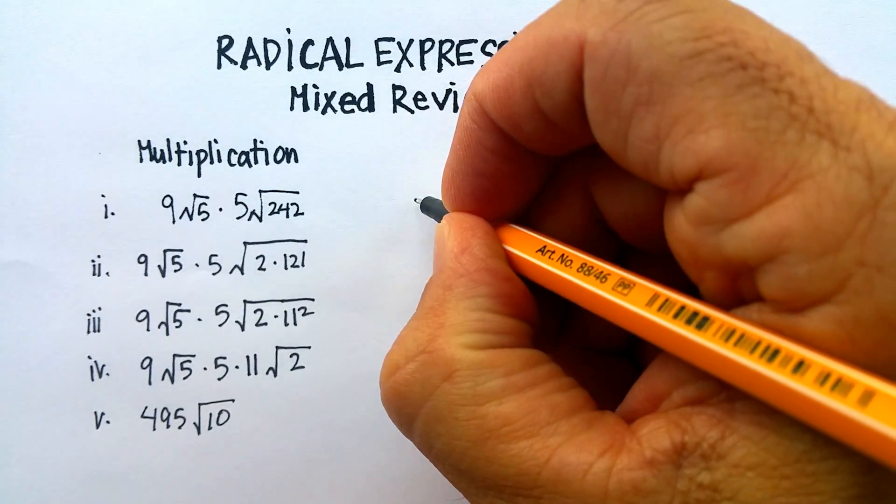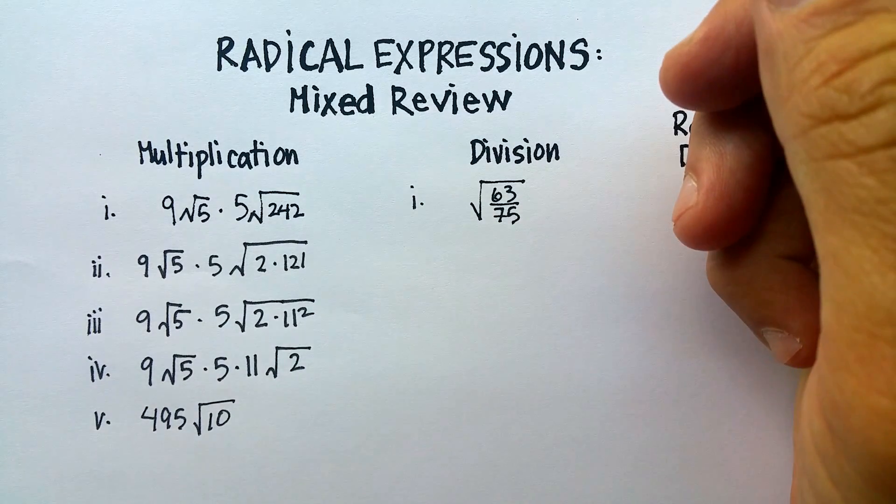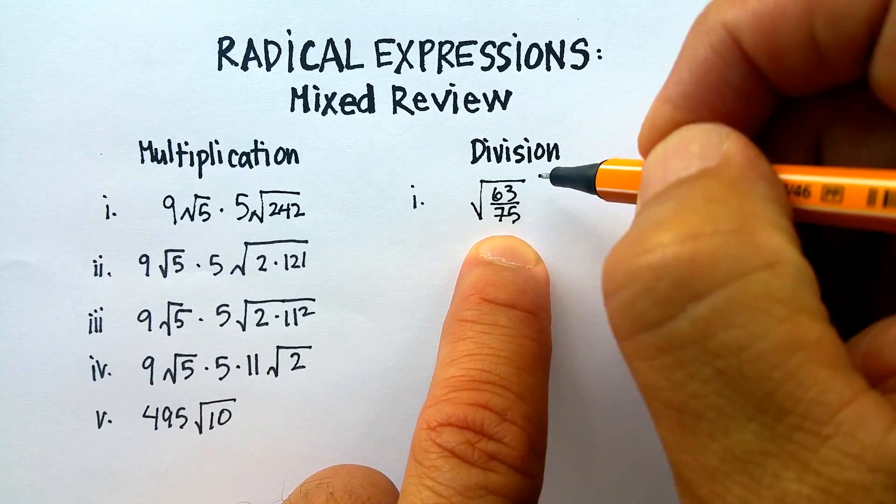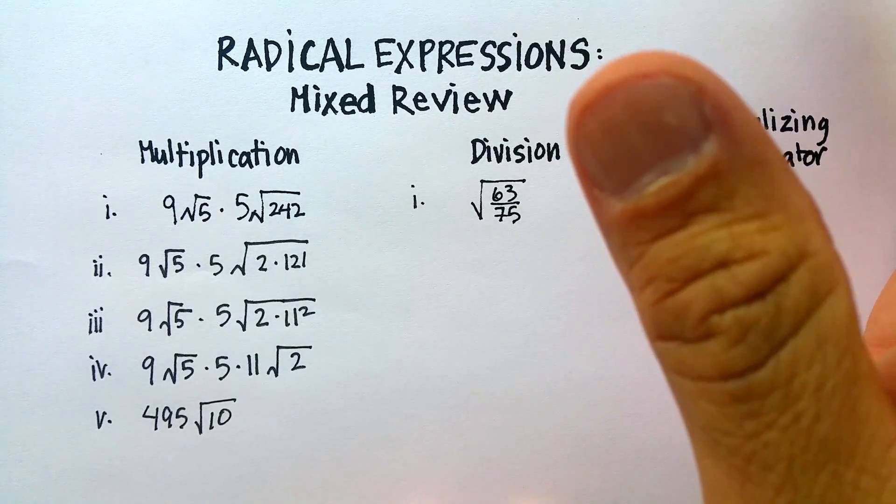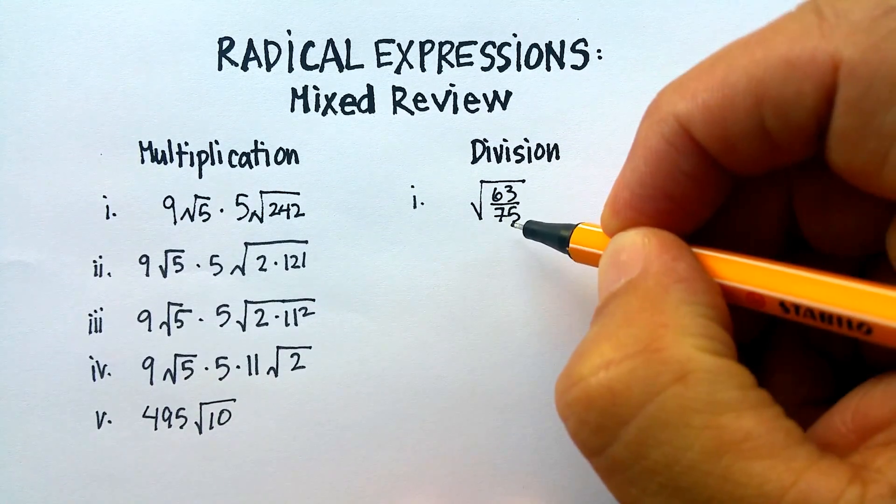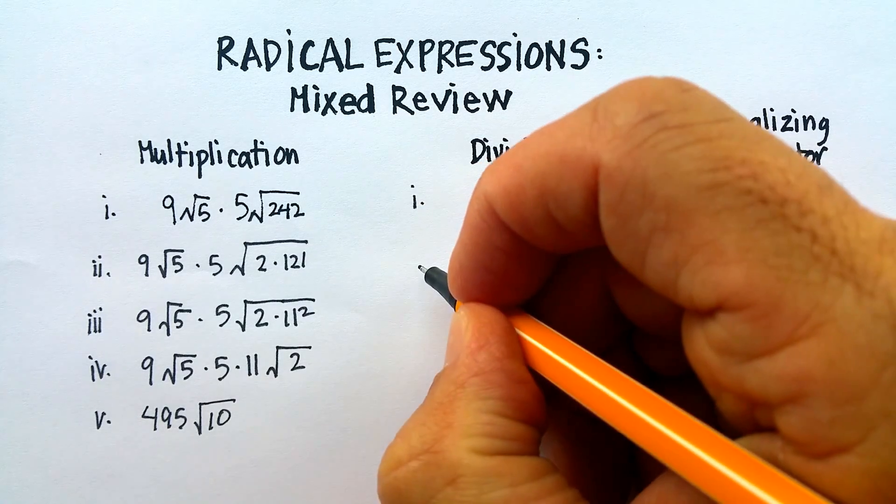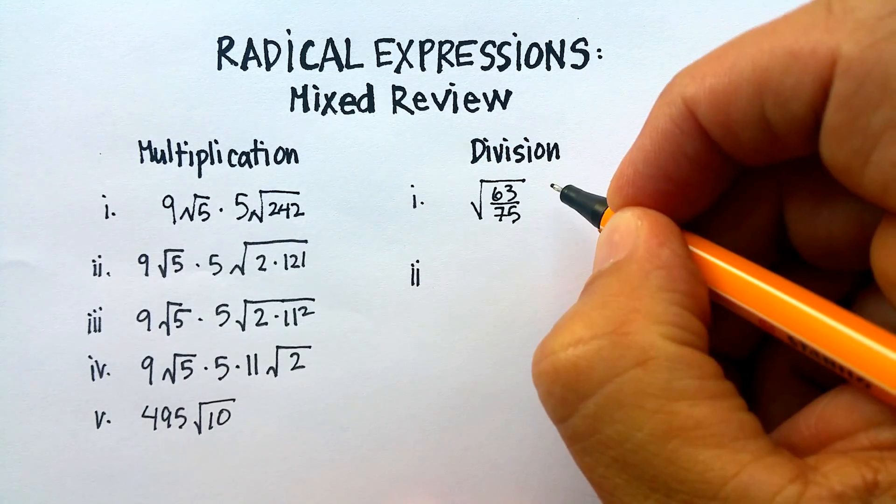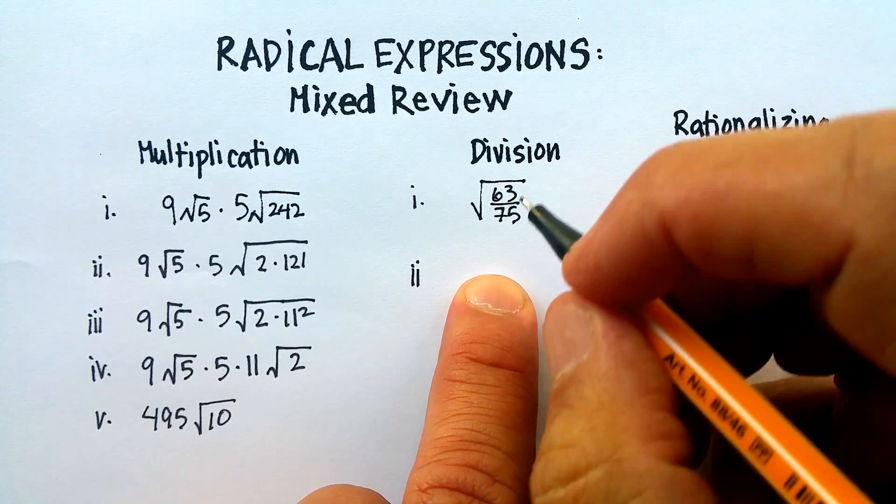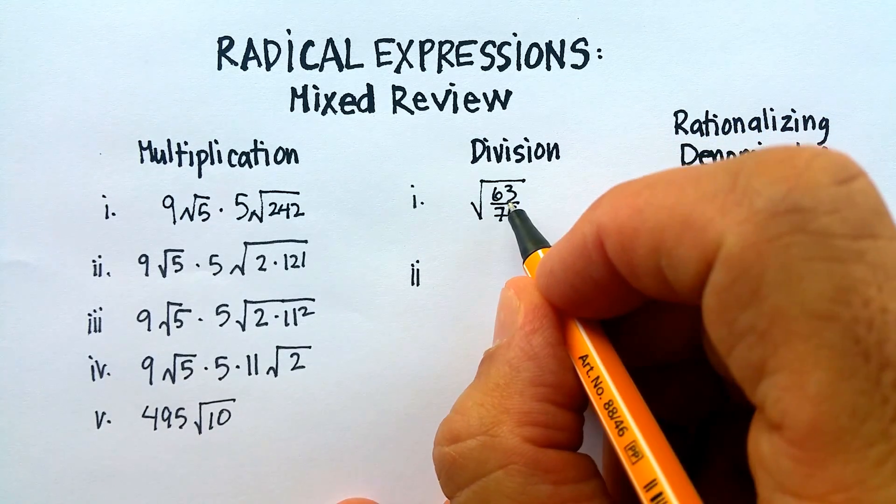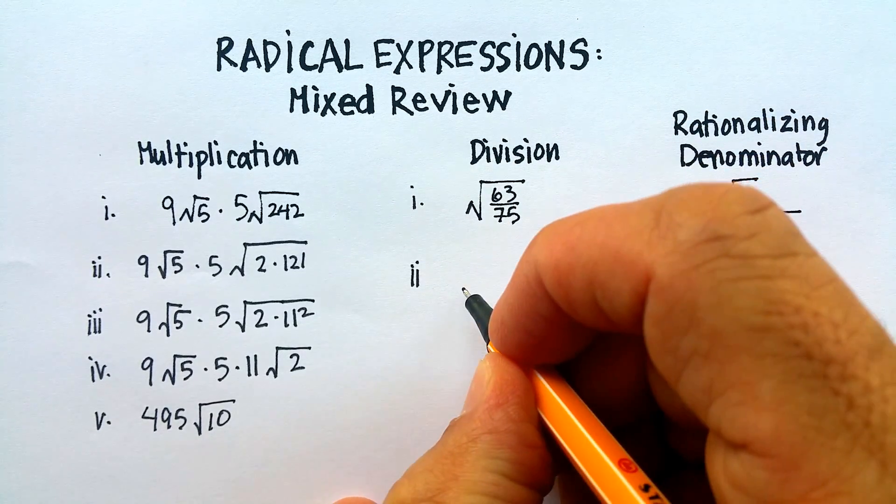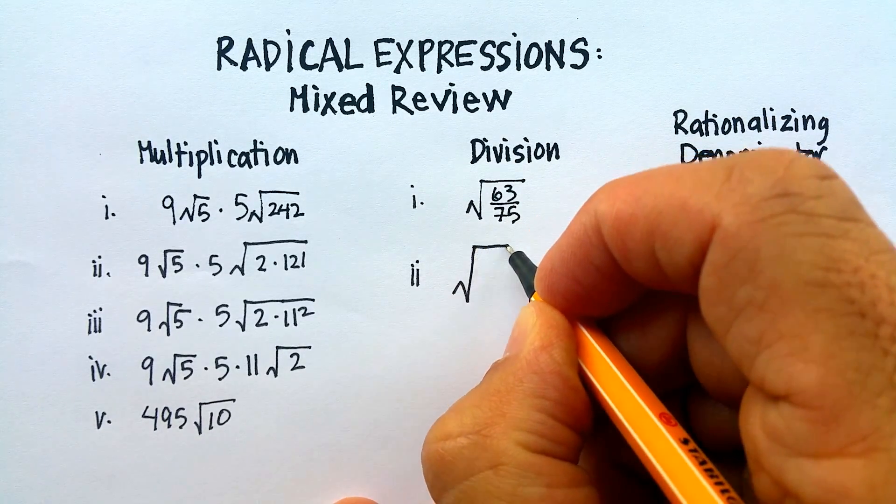Now, let's continue on with this division. When you have a fraction like this one underneath the radical sign, you can do one of two things. You can simplify the fraction already that exists, or you can break it up into two separate radicals. I'm going to not break it up into separate radicals, but I'm going to simplify the fraction itself.